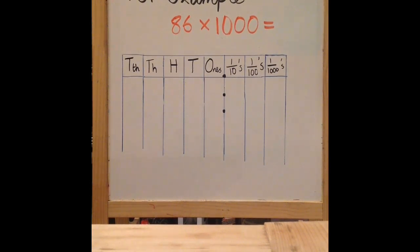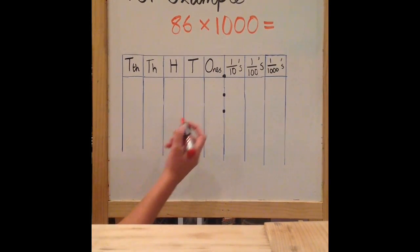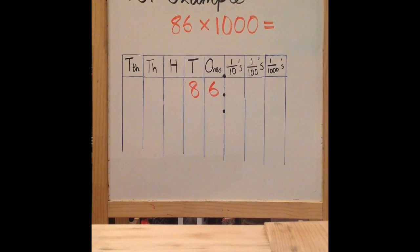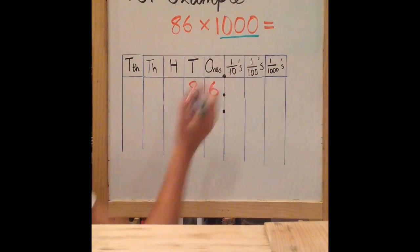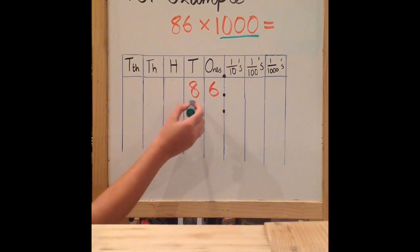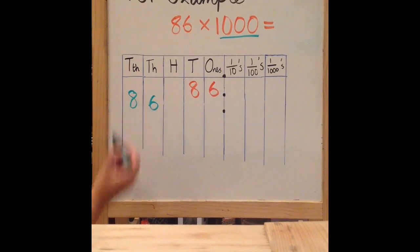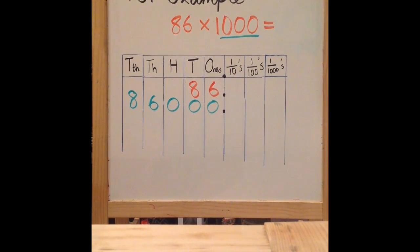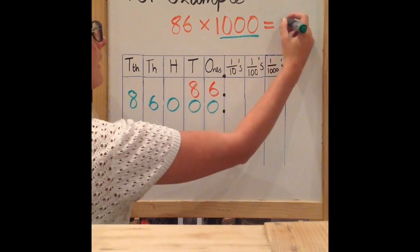For 86 multiplied by 1000, put your 86 in the correct place value columns: your 6 in the 1's column and your 8 in the 10's column. Because you're multiplying, the number will get bigger and the digits will move to the left. 1000 has three zeros, so your digits will move three places to the left. Your 6 goes into your 1000's column, and your 8 into your 10's of 1000's column. You have three empty columns, and since zero is the only possible placeholder, you must put three zeros — one in each column. So your answer to 86 multiplied by 1000 is 86,000.